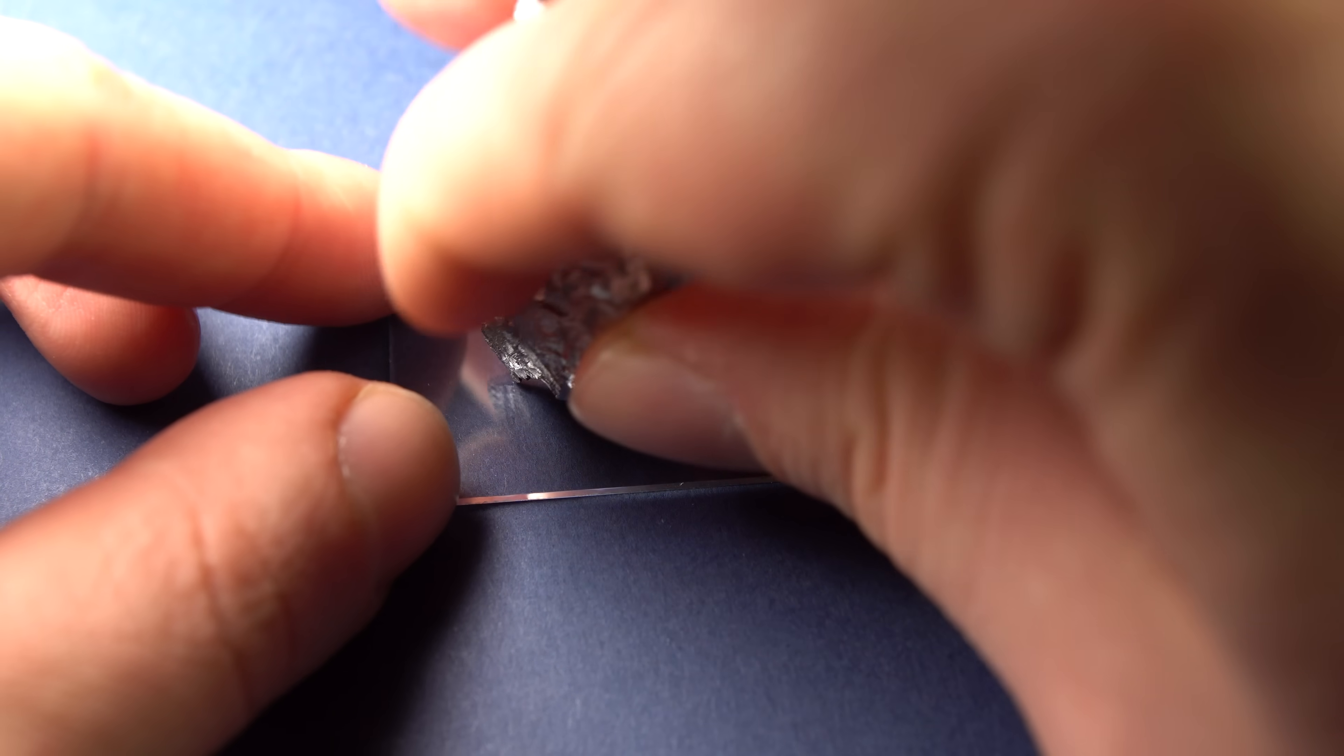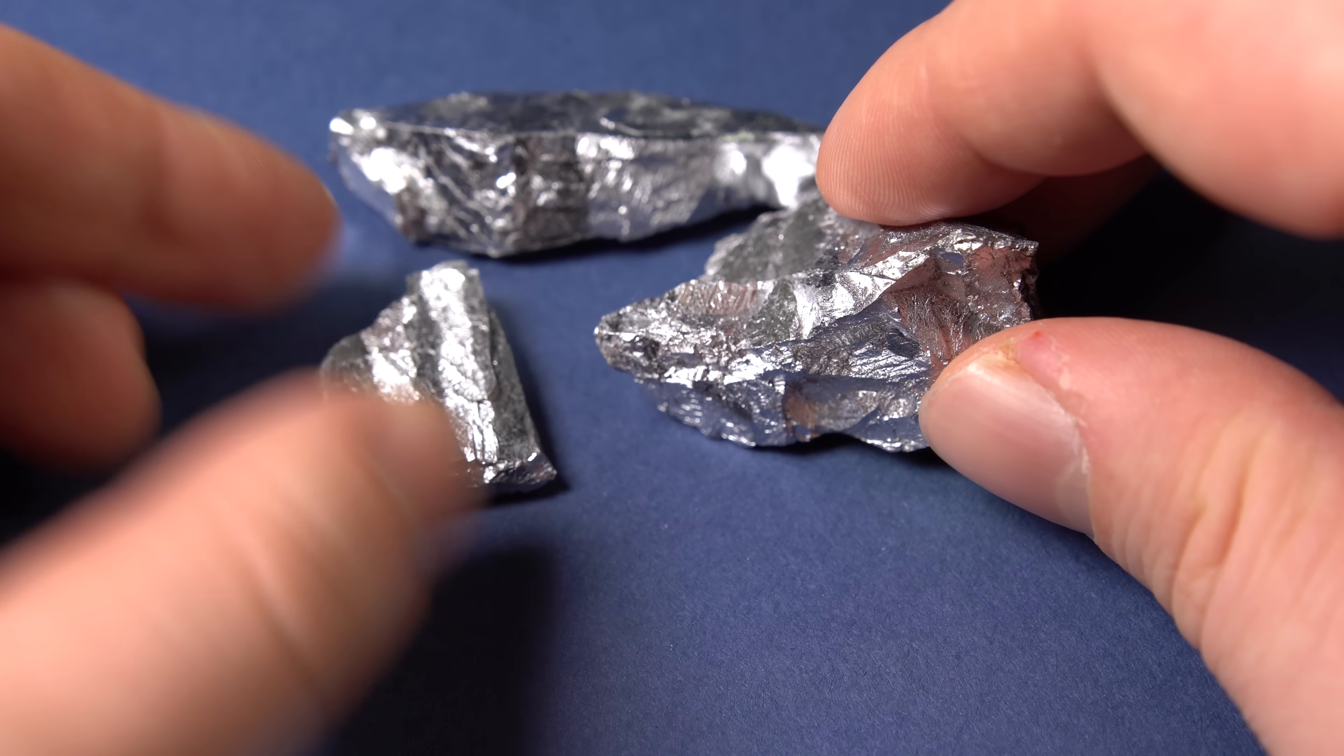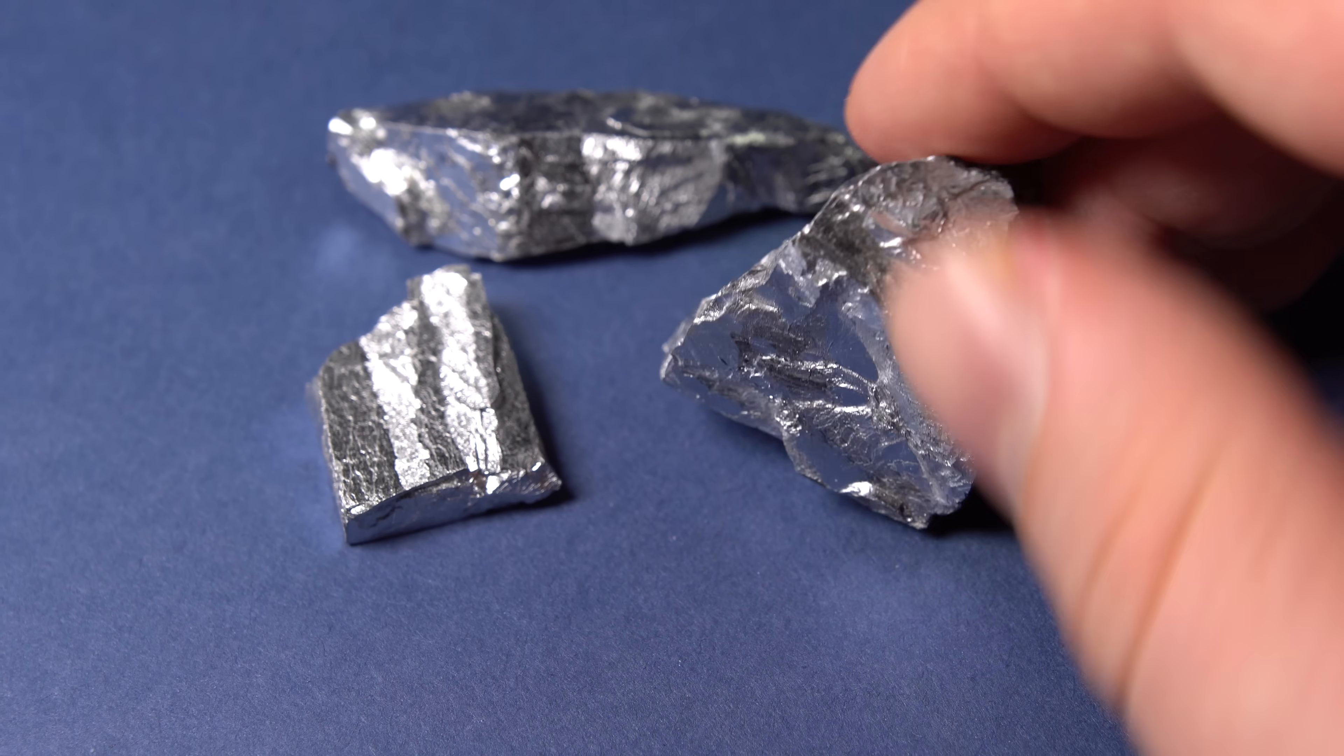I'll scratch an ordinary silicate glass with it. As usual, you cannot fool physics. Chromium easily scratches the surface of the glass, leaving clearly scannable markings. Although, I think that the hardness of chromium is very much dependent on its purity.